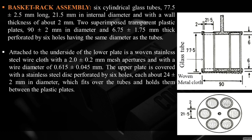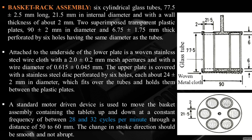The upper plate is covered with a stainless steel disc perforated by six holes each about 24 ± 2 mm in diameter, which fits over the tubes and holds them between the plastic plates. A standard motor driving device moves the basket assembly up and down at a constant frequency of 28 to 32 cycles per minute through a distance of 50 to 60 mm; the change in stroke direction should be smooth and not abrupt.